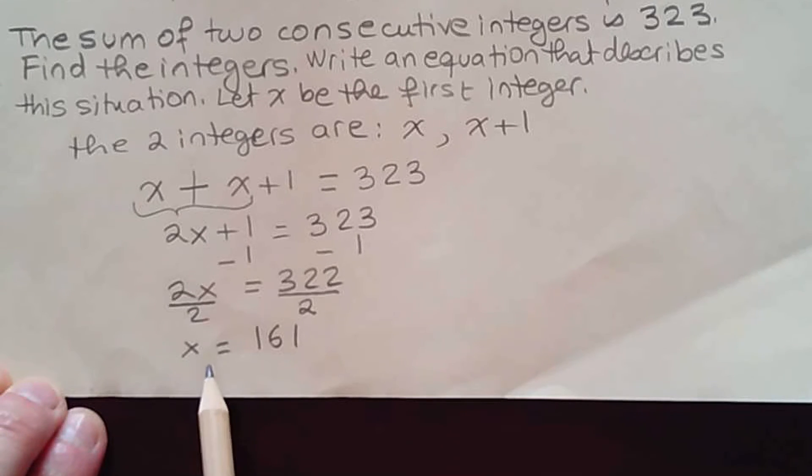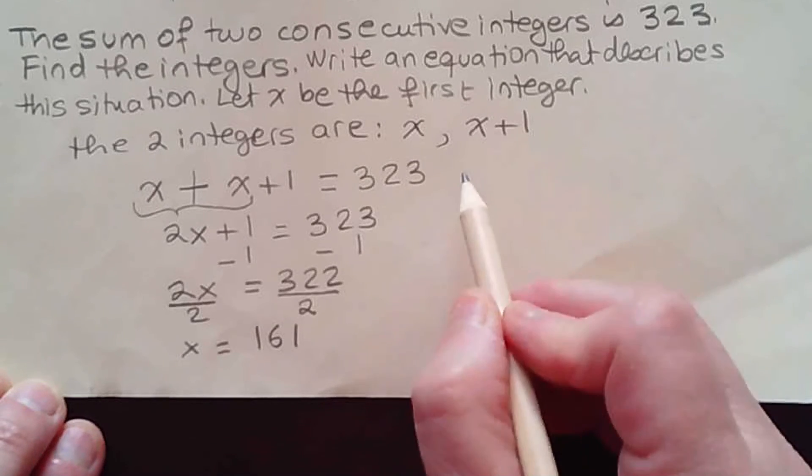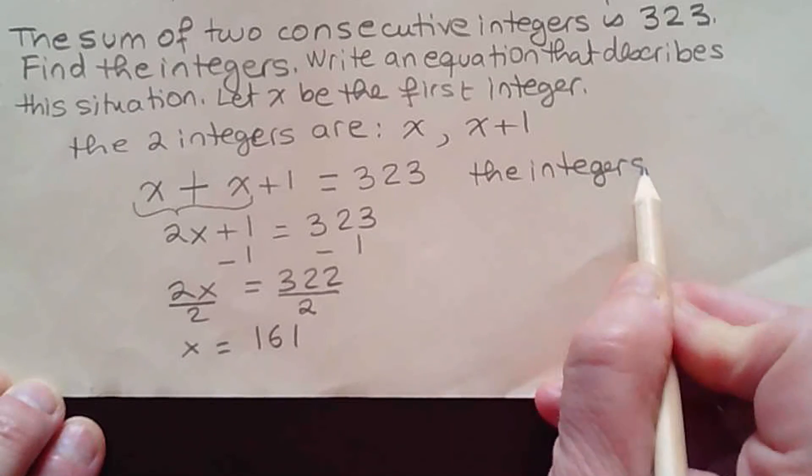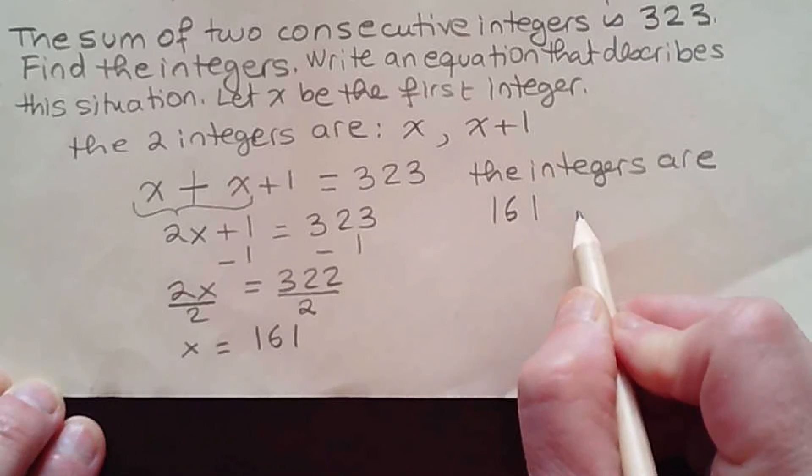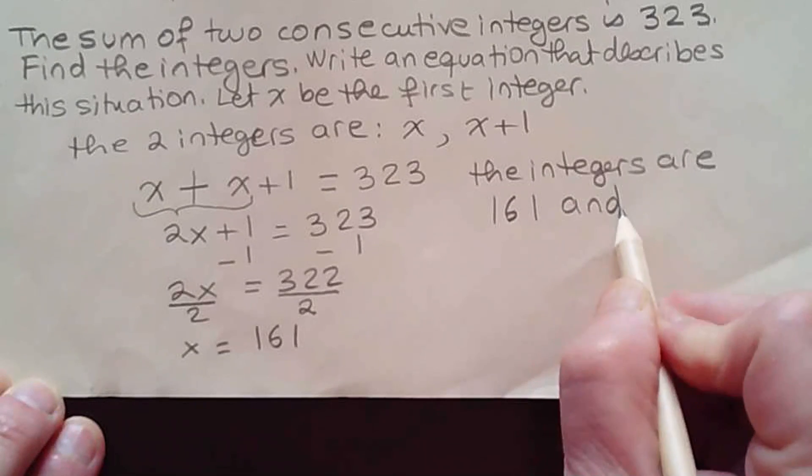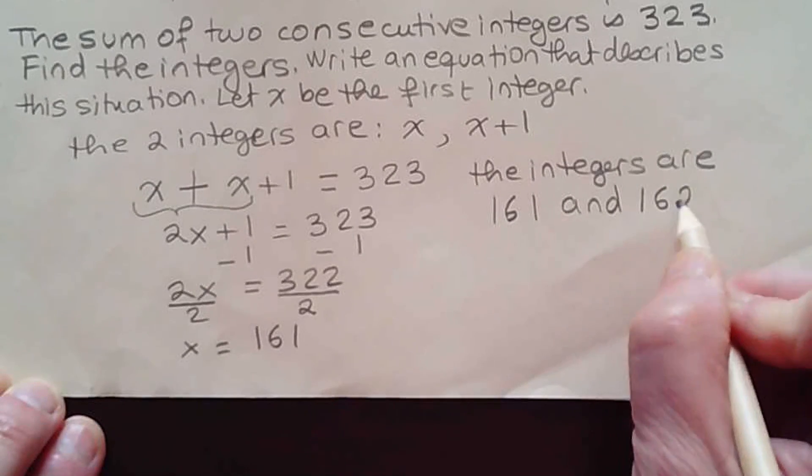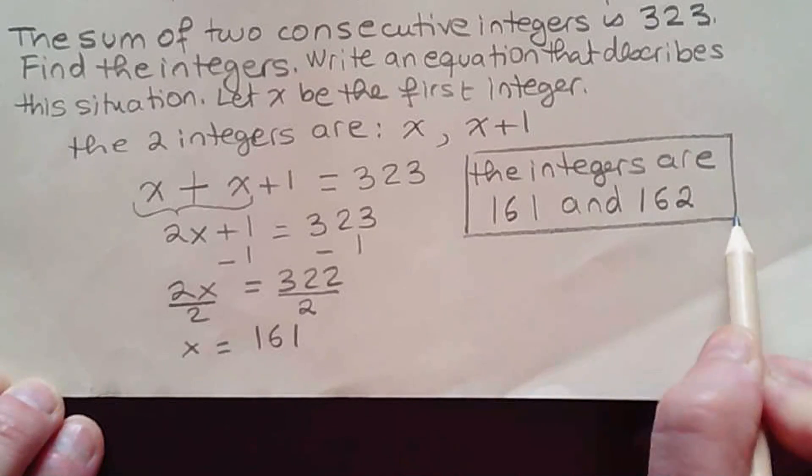161 is x. Remember, x is the first integer, so what's the next integer? It would be x plus one. So the integers are 161 and 162. These are the two integers.